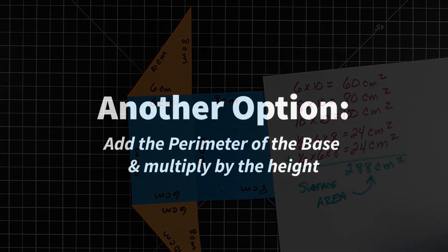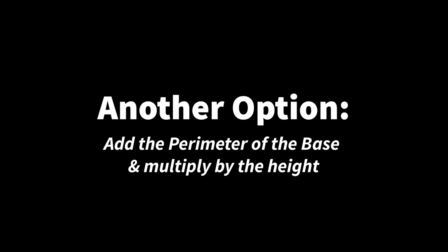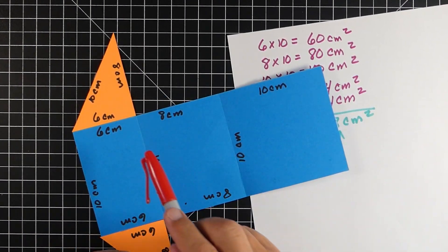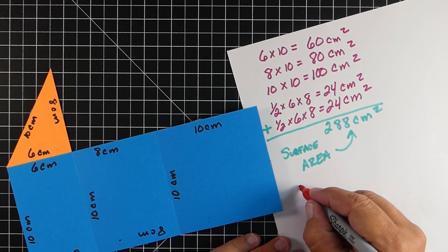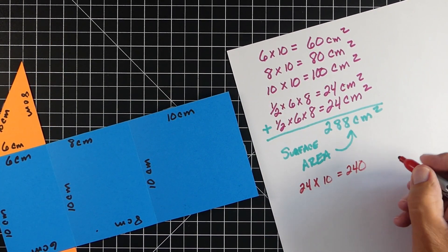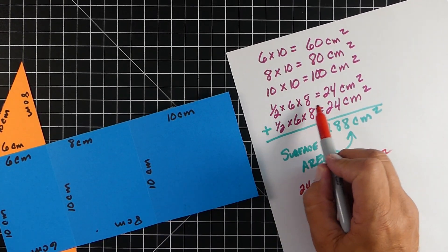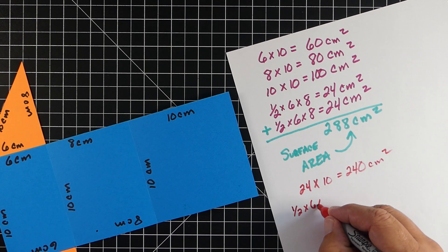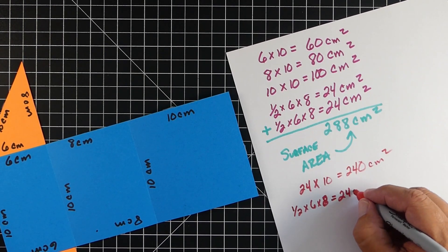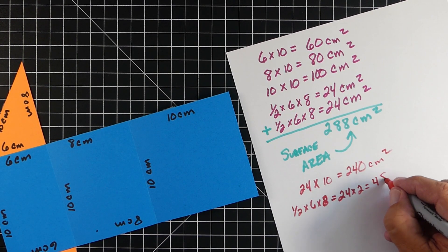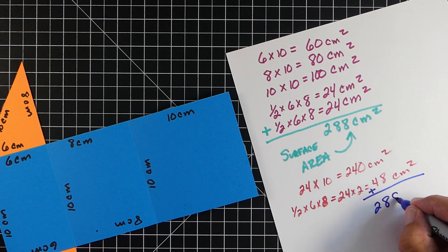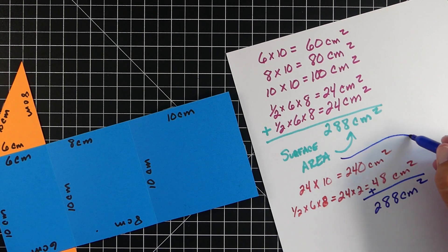Just like the last one, there's a shorter way to do this. What we can do is add up the distance around the base — six plus eight plus ten — that's gonna equal 24. And we can just go 24 times the height, or 10, and that gives us 240. So that's the area of all the lateral faces. Now we know that one half times six times eight gave us 24. We can just double that amount — 24 times two gives us 48 — so the two bases equal 48 centimeters squared. When we add those two up, we get 288 centimeters squared, just like above.